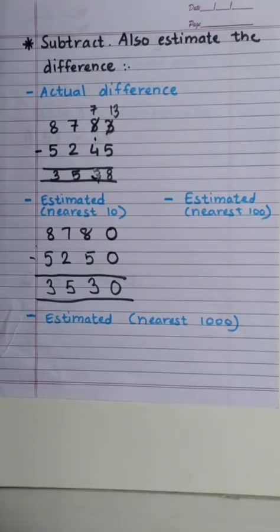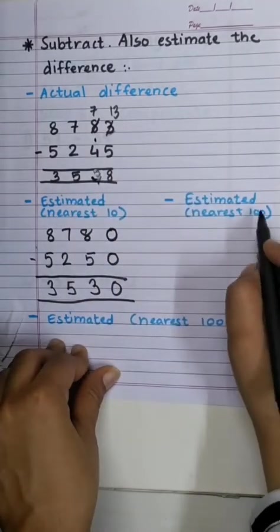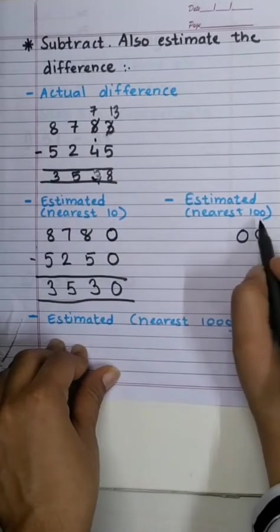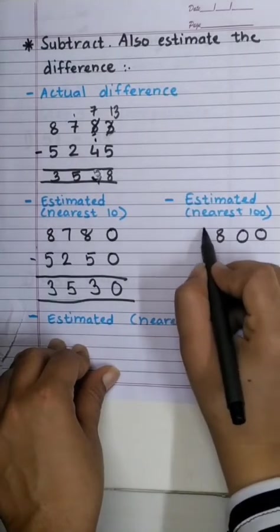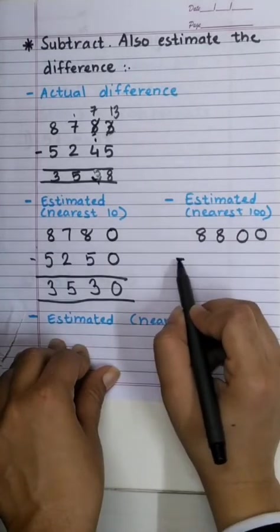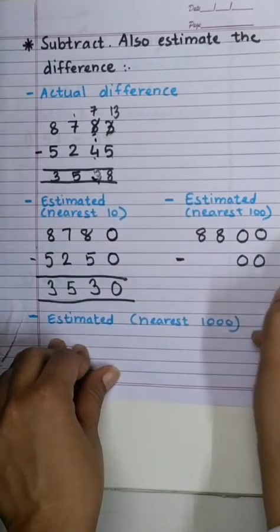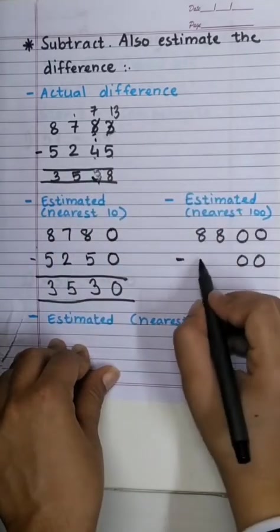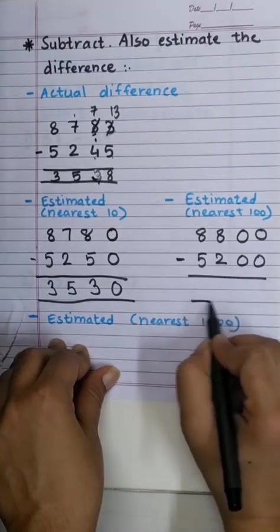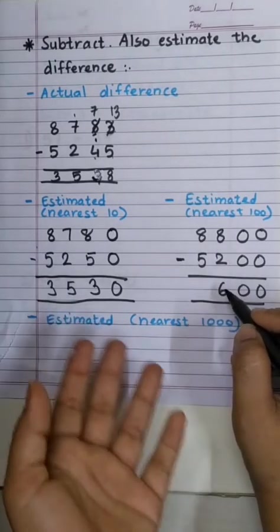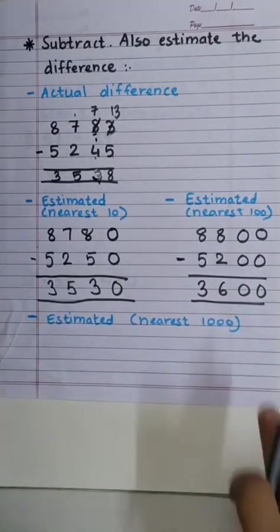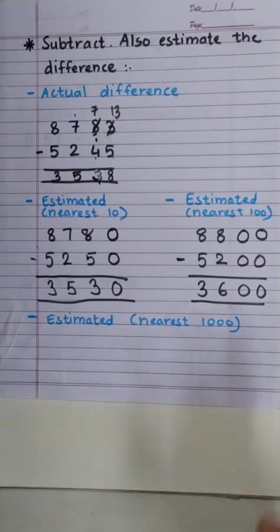Now, estimate to nearest 100. We will write the last two digits as 0. Because we have to estimate to the nearest 100. This digit will be observed. As this is more than 5, we will add 1 to the digit before it. Which makes it 8. Now, last two digits will be 0. This is smaller than 5. So, we will copy the remaining two digits as it is. 0 minus 0, 0, 0. 8 minus 2 is 6. And 8 minus 5 is 3. Again, this is close to this. Right? But nearest 100.